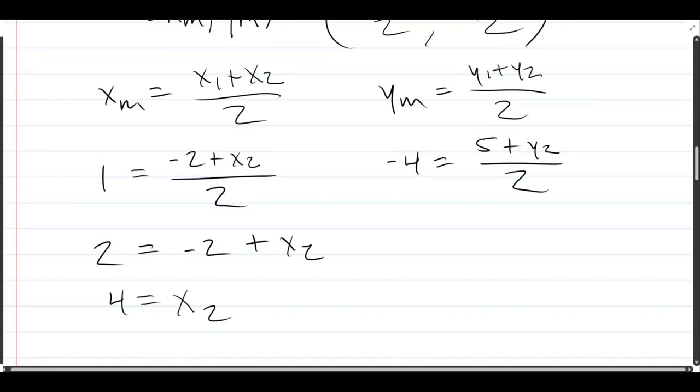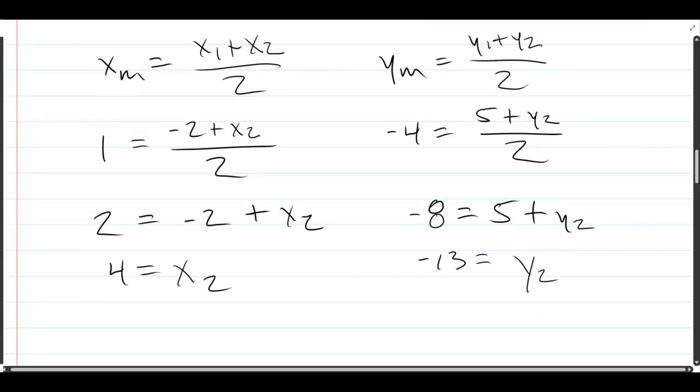Now for the Y equation, we're gonna do the same first step, multiply by two. Negative four times two is negative eight. And on the right side, it cancels the denominator. Now subtract five and we have negative 13 equals Y2. So there's X2, Y2 as a point. P2 equals four, negative 13. So that's not our midpoint, but that's our endpoint.